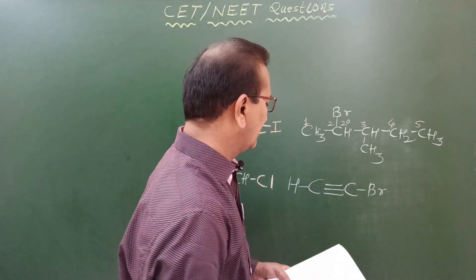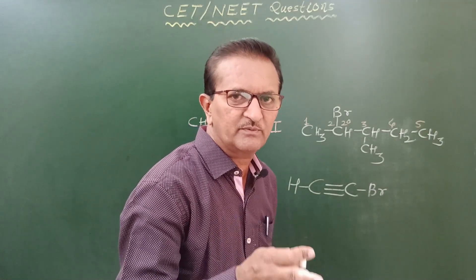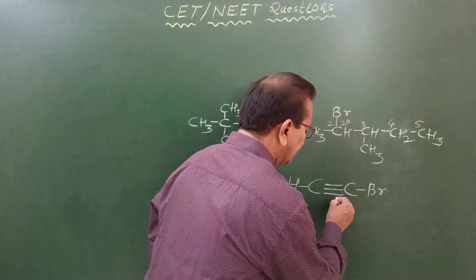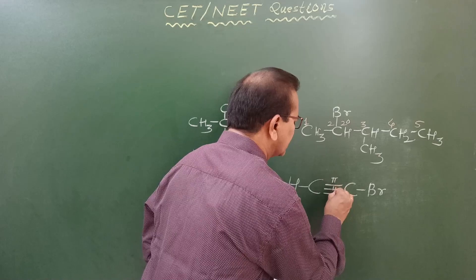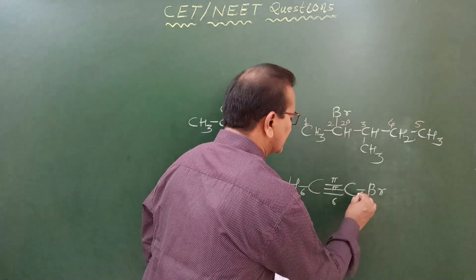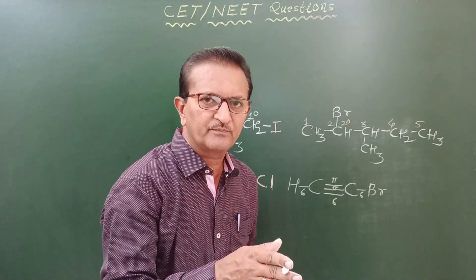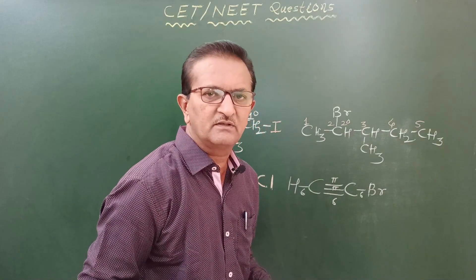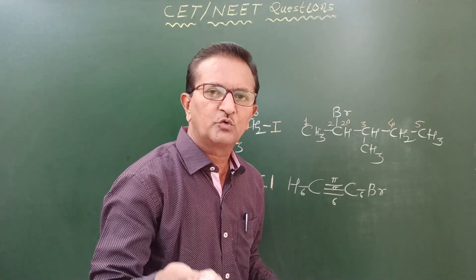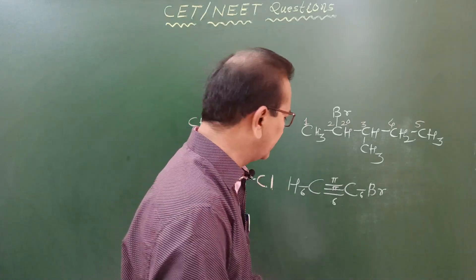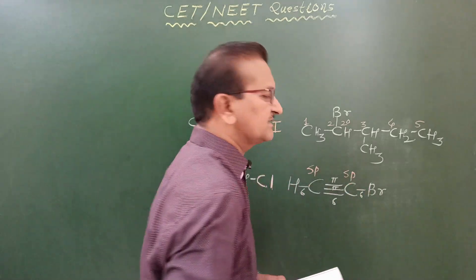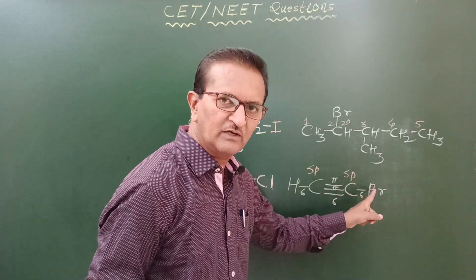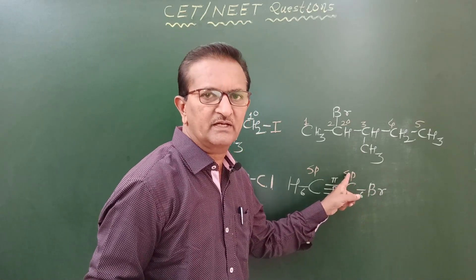In a triple bond, one bond is sigma and the remaining two are pi bonds. Whenever a carbon atom forms two sigma bonds and two pi bonds, that carbon atom is sp hybridized. Therefore, in bromoethyne, the halogen (bromine) atom is bonded to an sp hybridized carbon atom.